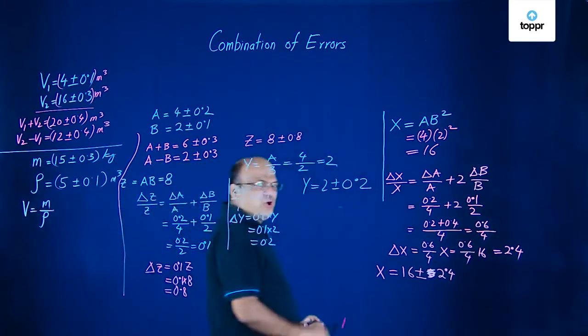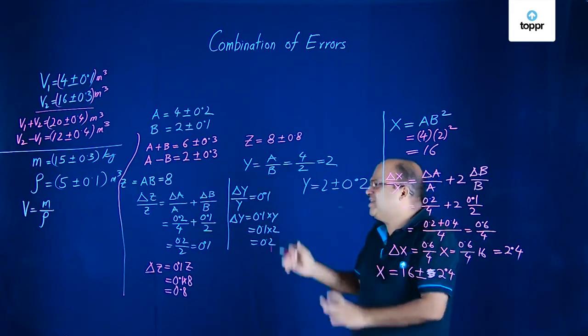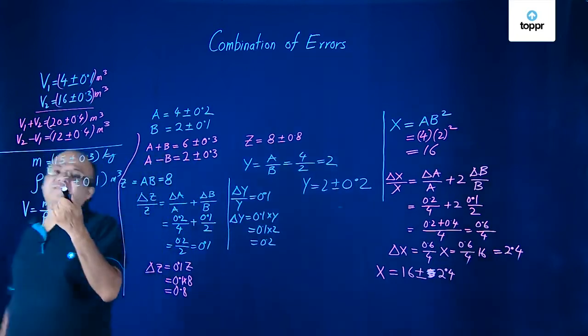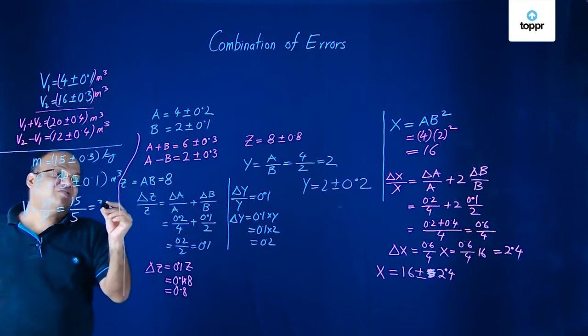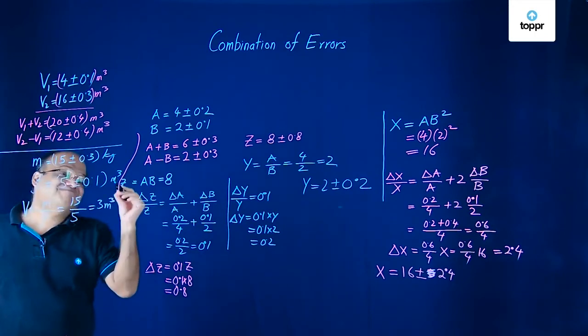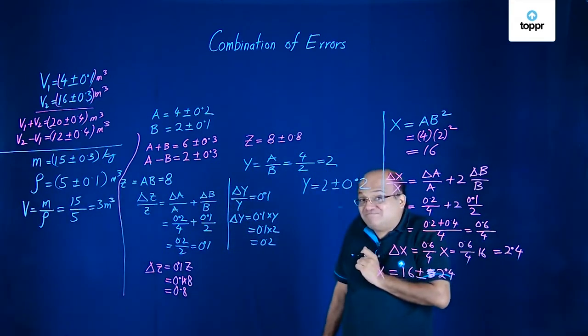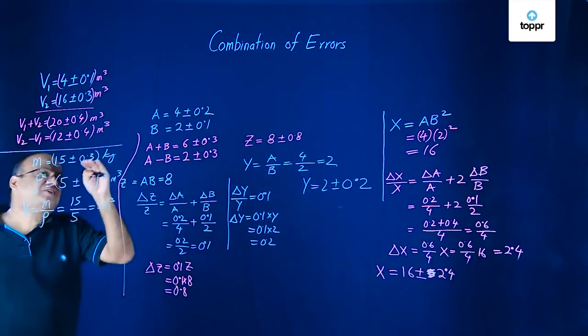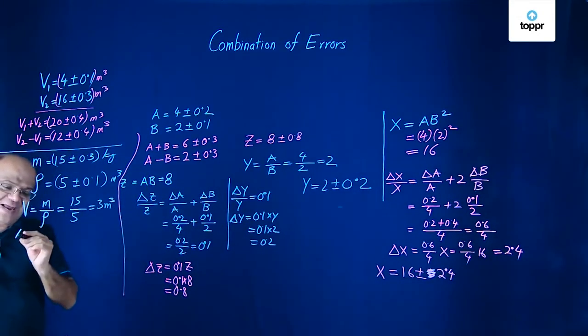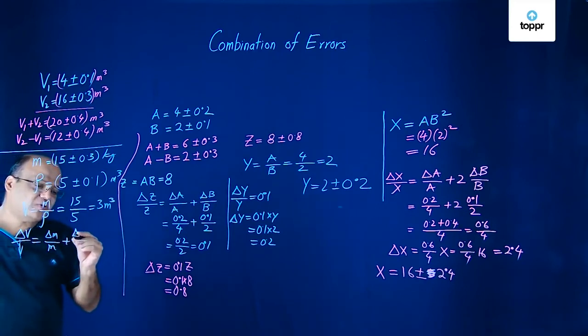So first of all do not bother about errors. Don't think of errors at all. Assume the mass is 15 kg. Density is 5. So what do you get volume? 15 by 5. That is 3 meter cube. Now you want to calculate plus minus how much? So how to do that? Now we will add the fractional errors.